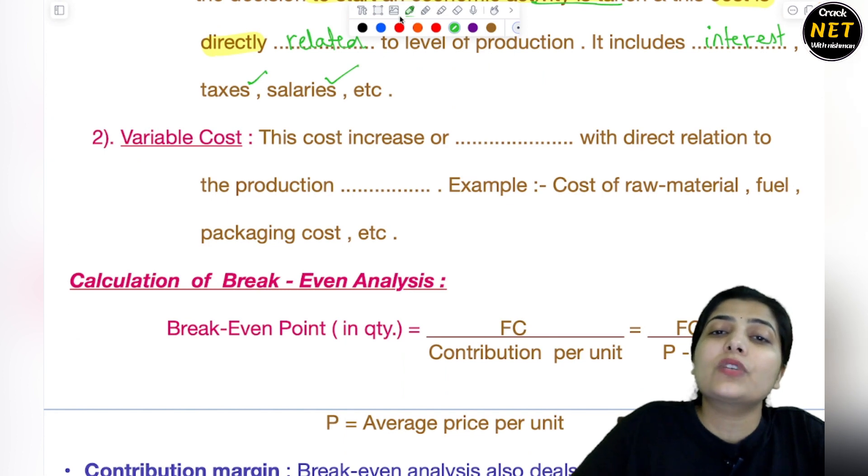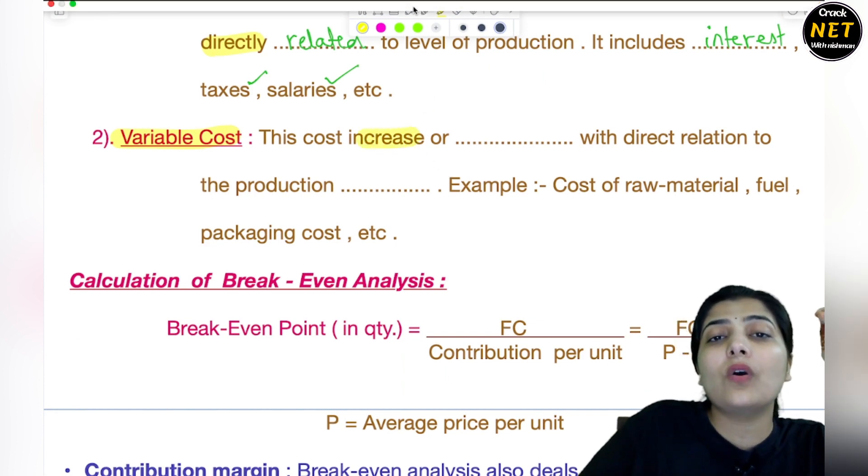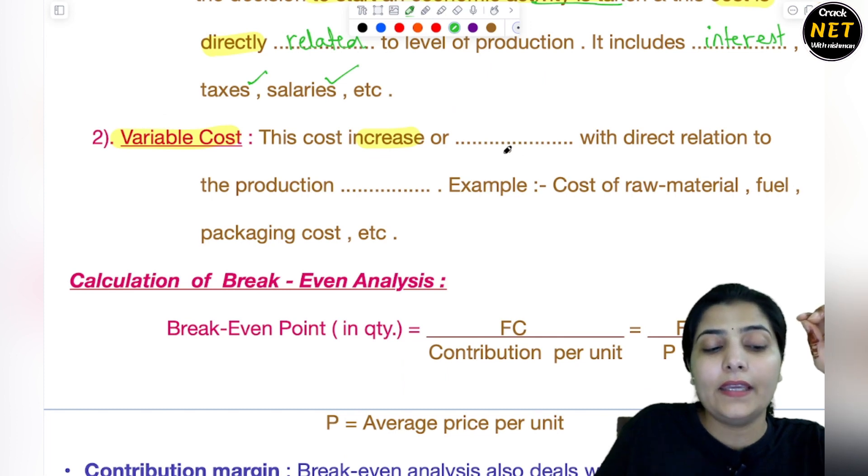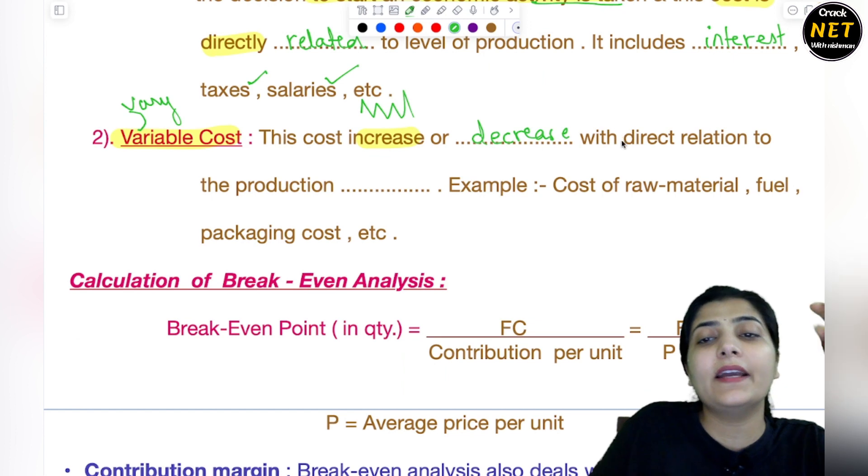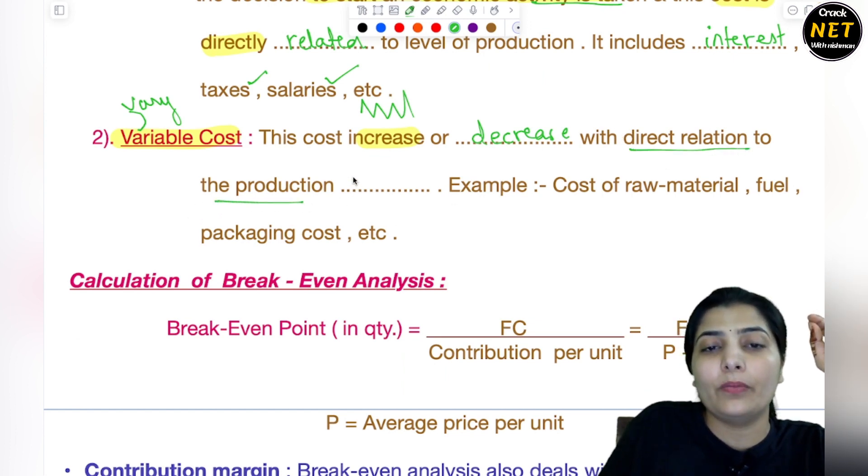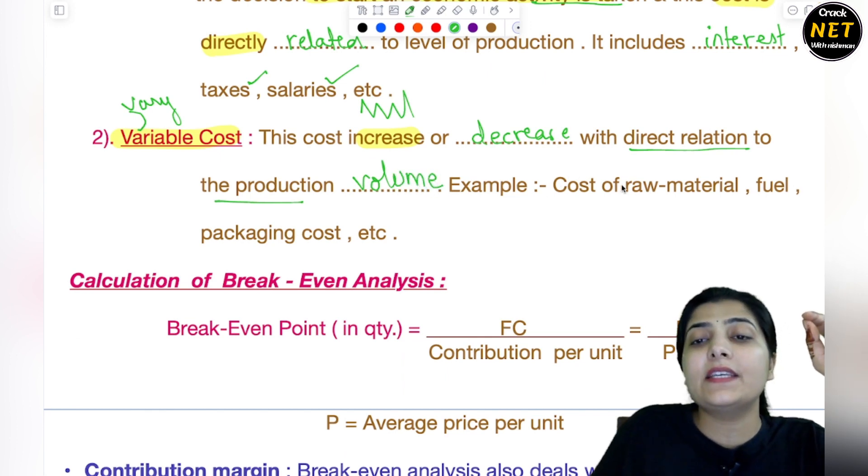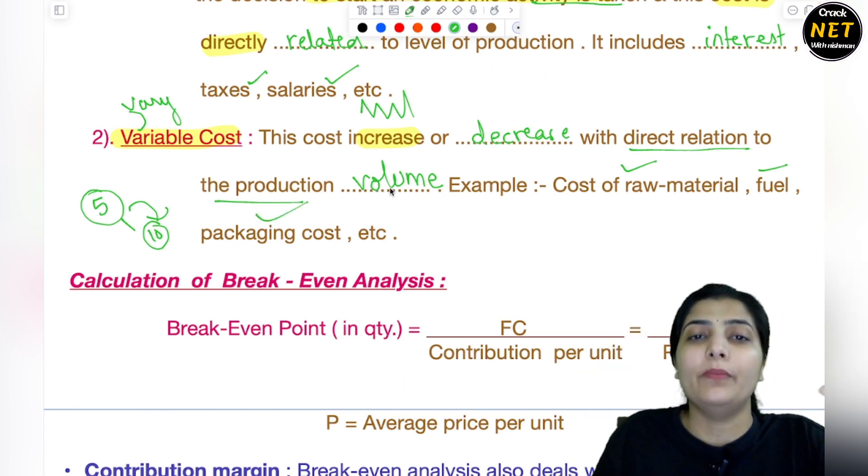Next is variable cost. Variable cost increases or decreases with direct relation to the production volume. Your production volume determines it. Suppose today you produced five chairs, tomorrow you produce ten chairs, then more cost will come because more raw material is needed, more fuel is needed, transportation and packaging costs increase. So that depends upon the production volume - higher the volume, higher the variable cost.